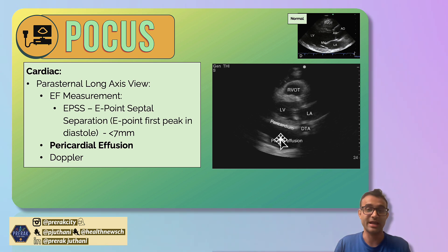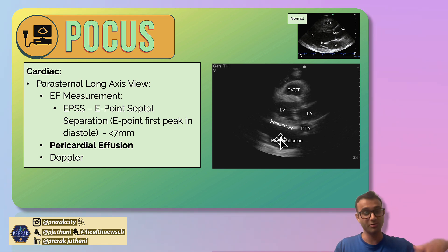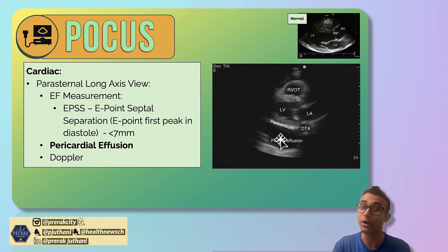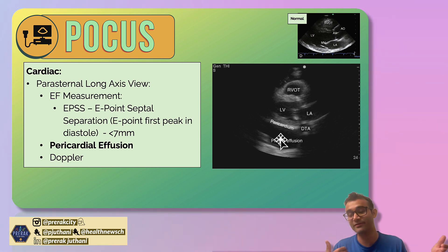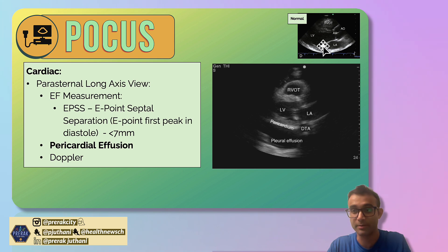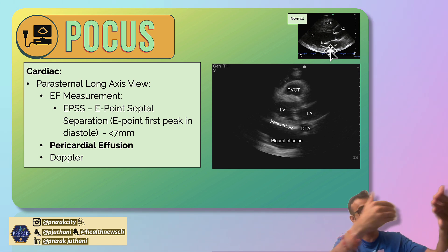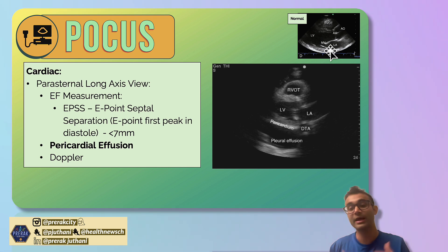The last topic for today is the Doppler aspect. In ultrasound, you can turn on Doppler mode, which uses the Doppler effect — when sound waves move toward you the frequency changes, and when they move away the frequency also changes. We use this physics to detect when something is moving in the expected direction versus moving backwards. This is particularly helpful in the heart for identifying regurgitant valves. In the parasternal long axis view we have a great view of the mitral valve, and by turning on Doppler mode you can see if there is any regurgitation across that valve. Mitral regurgitation can be a cause of hypotension because blood is moving backwards into the left atrium instead of forward.